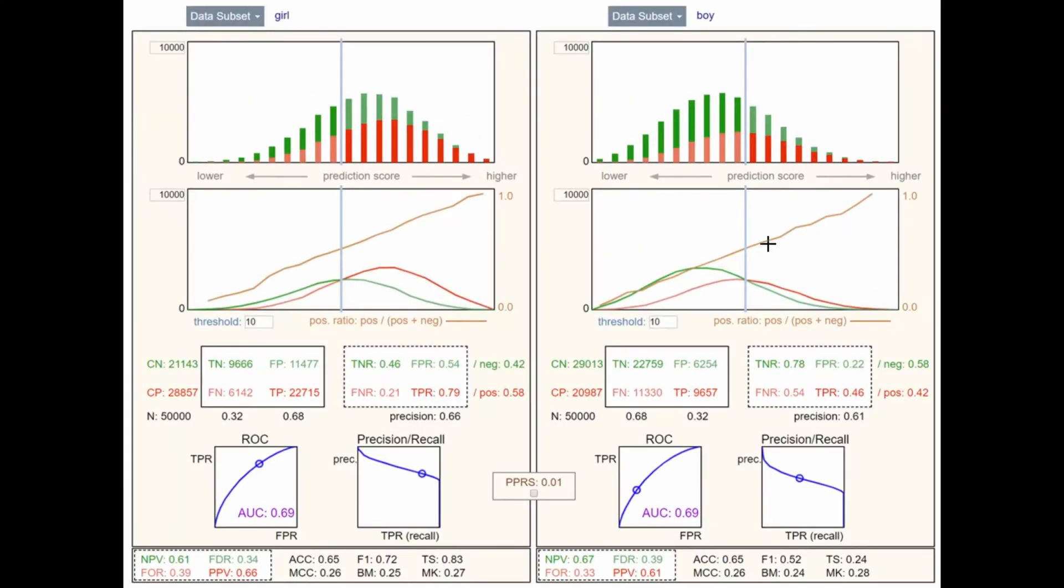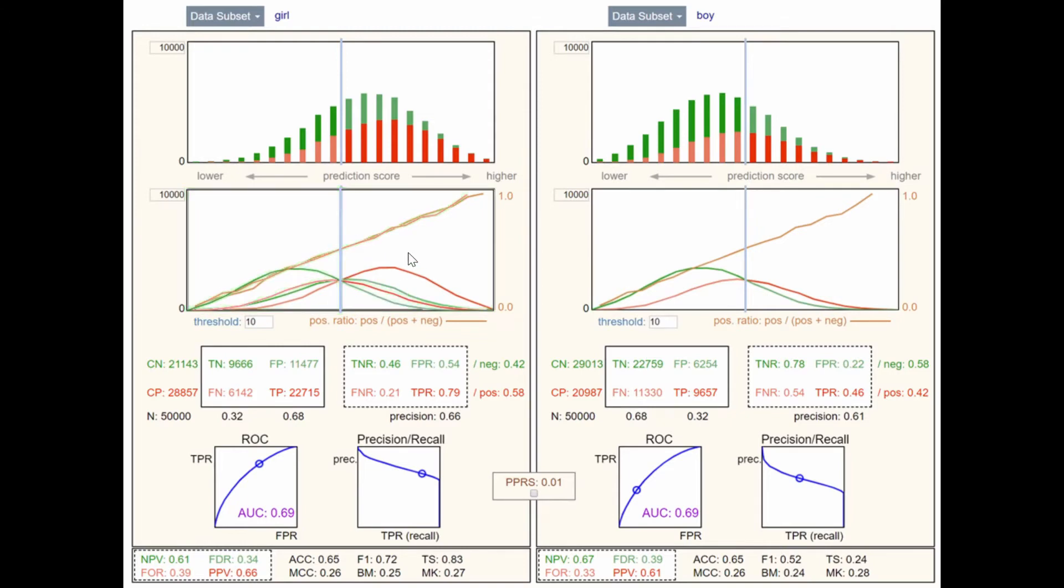Calibration accuracy between two populations is achieved when their positive prediction ratio, or PPR curves, line up. This checkbox on the confusion matrix dashboard overlays them so you can see.